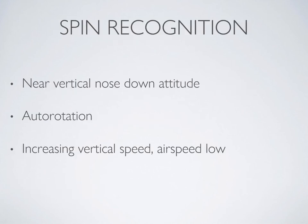You won't have any confusion about whether you're in a spin or not — you'll be nose down, likely experiencing autorotation, and your vertical speed will be high but your airspeed will be low.